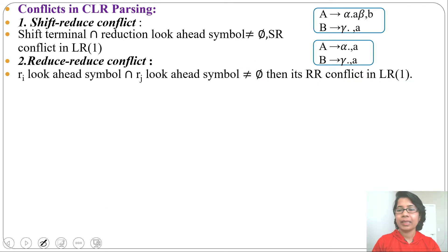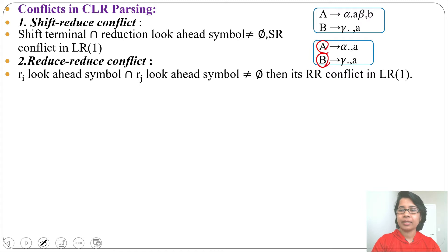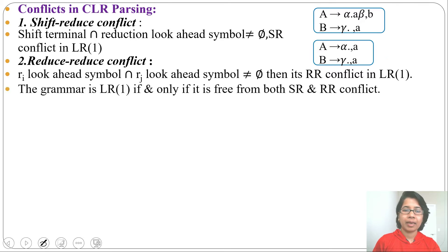In SLR parsing, to check for a reduce-reduce conflict, find FOLLOW of A and FOLLOW of B — if their intersection is not equal to φ, then there is an RR conflict for SLR1. For LR0, if one state contains two reductions, that is an RR conflict.